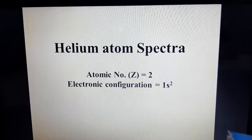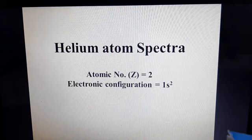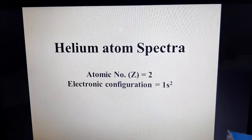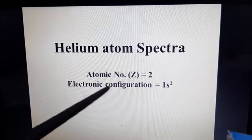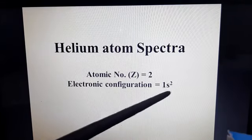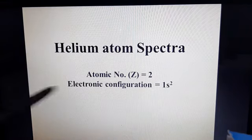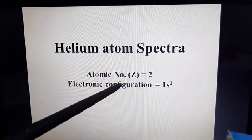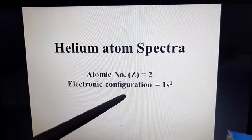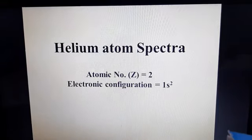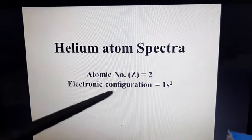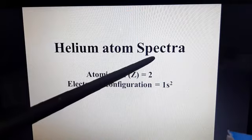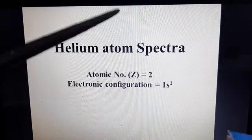Good morning students. Today we will discuss spectra of helium atom as well as spectra of mercury atom. The atomic number of helium atom is 2 and electronic configuration is 1s², that is 2 electrons lying in the first shell. The first shell becomes the ground state for helium atom and the second, third, fourth and so on shells act as excited states. Spectra is produced when there is a transition of electron from one shell to another shell.